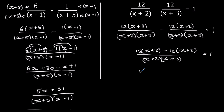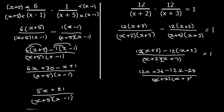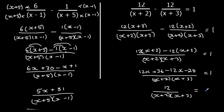Simplify the top line: we've got 12x plus 36, minus 12x, minus 24. The bottom's the same, and it still equals 1. We can simplify the top line even more — 12x take away 12x is nothing, and 36 take away 24 is just 12. So it gives us 12 over x plus 2 times x plus 3, equals 1.